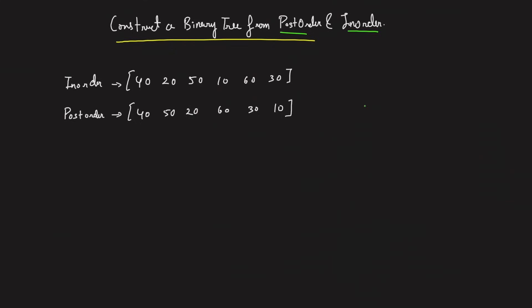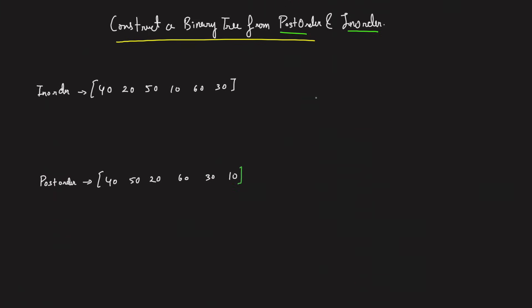The answer binary tree here is: 10 at the root, 20 and 30 as children, with 40, 50, and 60 as further nodes. If you write down the inorder and postorder of this tree, you'll get the given sequences. The task is to construct this binary tree and return its root.